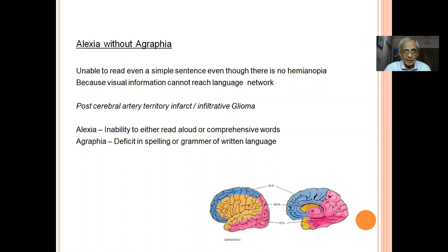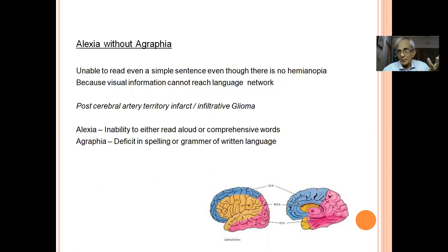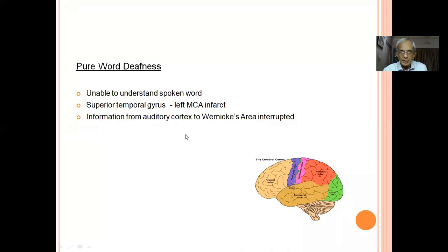Alexia without agraphia: 'lexicon' means reading, 'agraphia' means writing. Alexia means inability to read even a simple sentence, even though there is no hemianopia. The primary visual cortex receives good information, but it does not reach the language network for interpretation. The vision is good, but interpretation is not there — that is called alexia. Importantly, they are able to write. This is due to posterior cerebral artery territory involvement of the occipital cortex primary and association areas. Pure word deafness involves the superior temporal gyrus — even sounds are not processed.